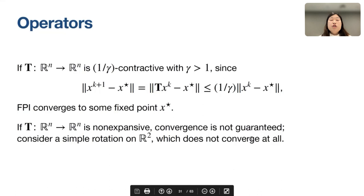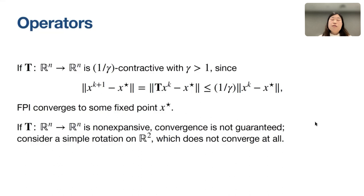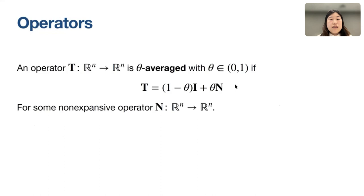For a non-expansive operator, convergence is not guaranteed. Consider a simple 90-degree rotation: starting at point (1,0), the iterates rotate but the radius never decreases, so it never converges. Non-expansive is thus on the boundary between converging and non-converging fixed point iterations. In fixed point theory, there are intermediate conditions between contractiveness and non-expansiveness.